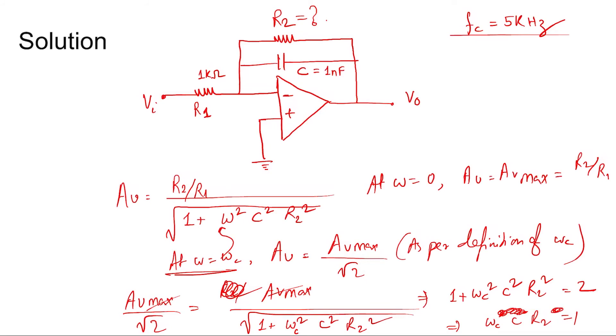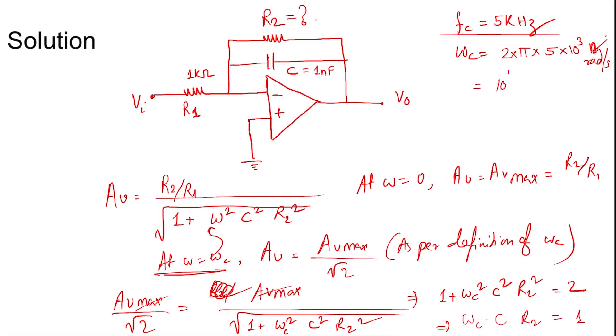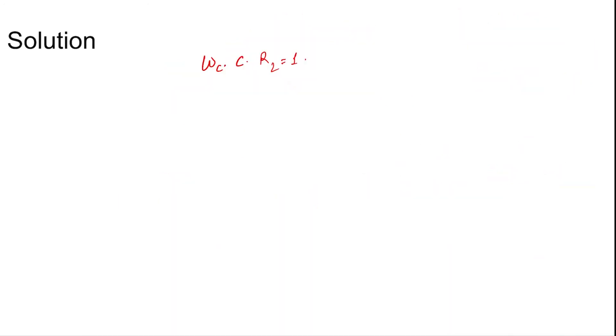Since ωc × C × R2 = 1, now fc is 5 kilohertz, so ωc is 2π × 5 kHz = 10⁴π radians per second. C value is 10 nanofarad. From ωc × C × R2 = 1, C is 10⁻⁸, so taking C to this side it's 10⁸, and ωc is 10⁴π.